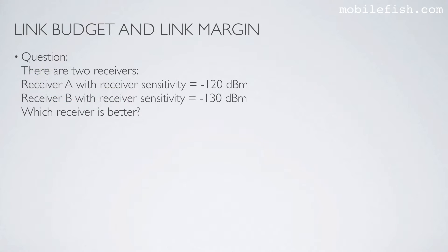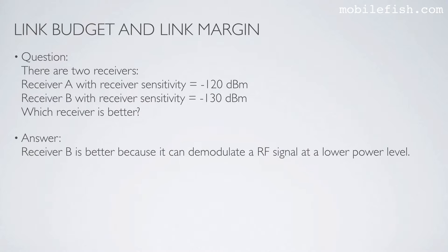Question: there are two receivers. Receiver A with receiver sensitivity of minus 120 dBm, and receiver B with receiver sensitivity of minus 130 dBm. Which receiver is better? The answer is receiver B, because it can demodulate a radio frequency signal at a lower power level.